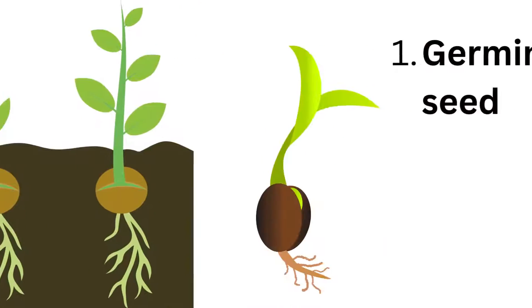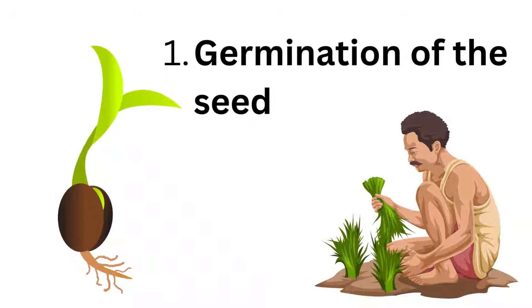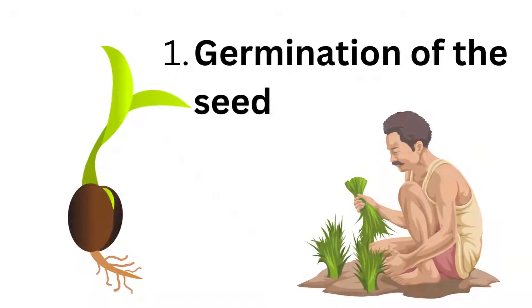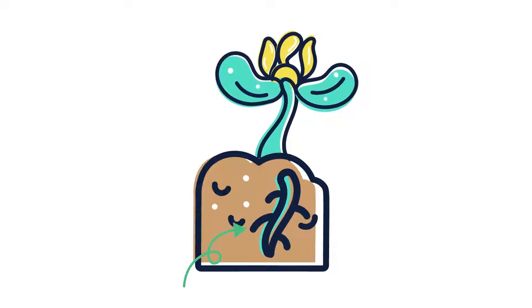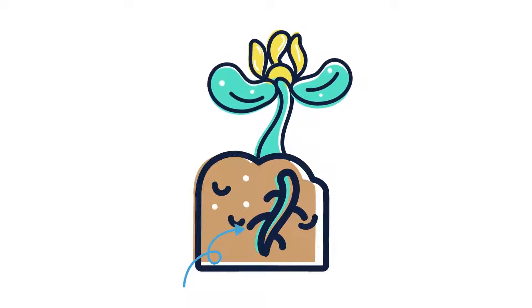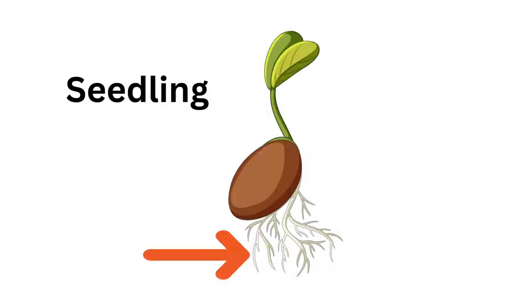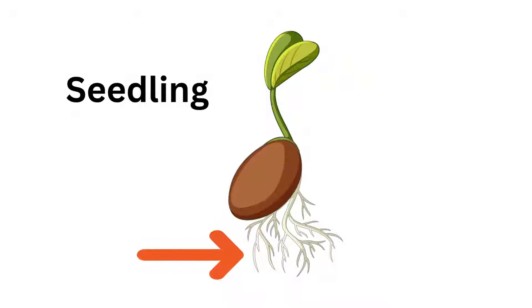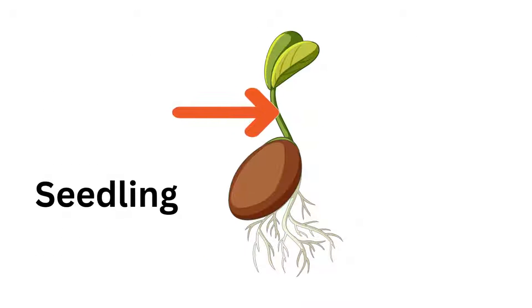The first stage of the life cycle is the germination of the seed. This occurs when the seed absorbs water and begins to sprout. The sprout, or seedling, will have a small shoot and a root system. The shoot will eventually grow into the stem of the plant, while the roots will anchor the plant into the ground and absorb water and nutrients.